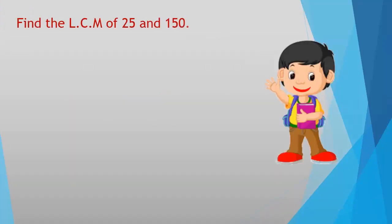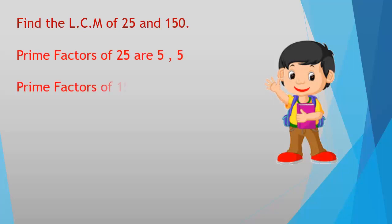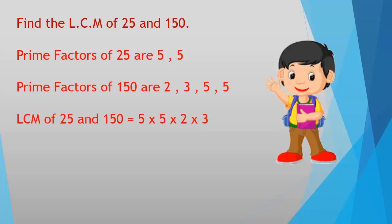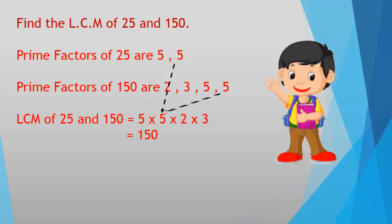Find the LCM of 25 and 150. The prime factors of 25 are 5 × 5. The prime factors of 150 are 2, 3, 5, 5. Therefore, the LCM of 25 and 150 is 5 × 5 × 2 × 3, which equals 150.